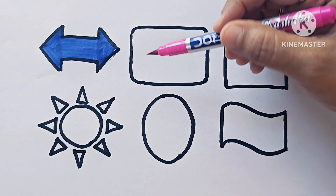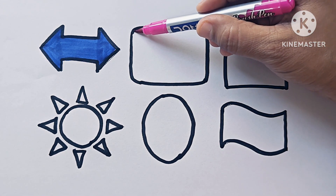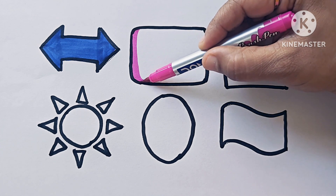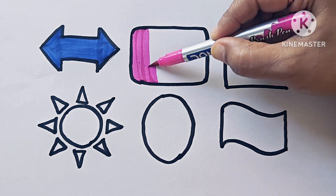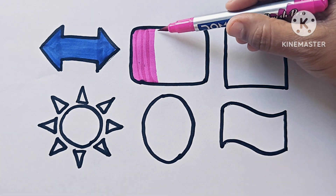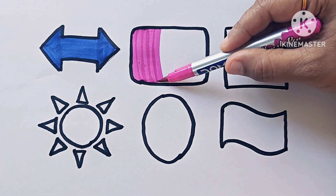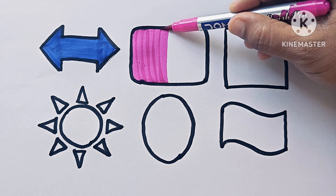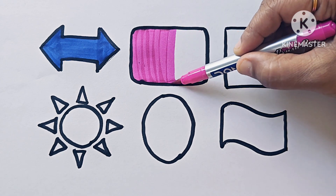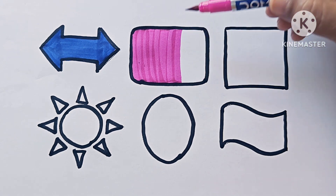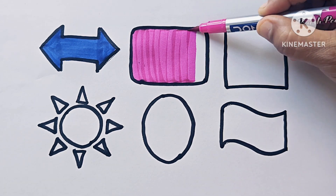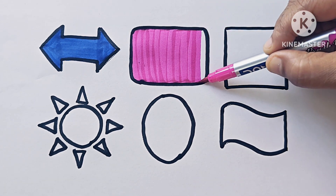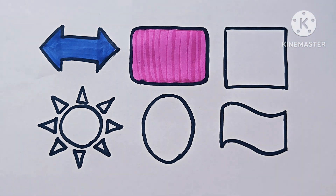This is rectangle — rounded corner rectangle. And the color is pink. Its corners are round in shape, that's why it is rounded corner rectangle. The color is pink.